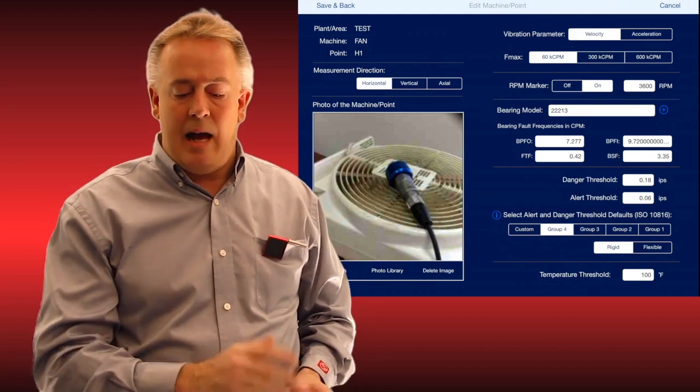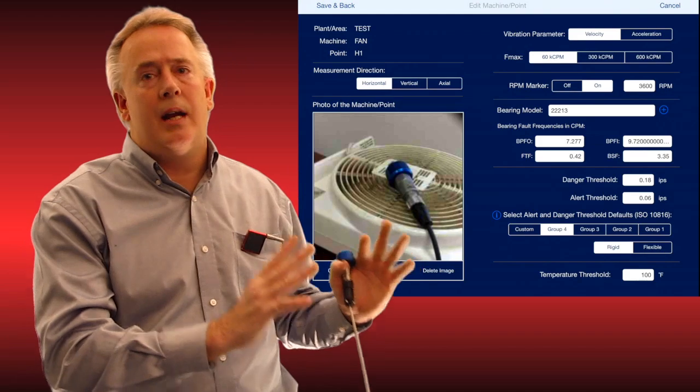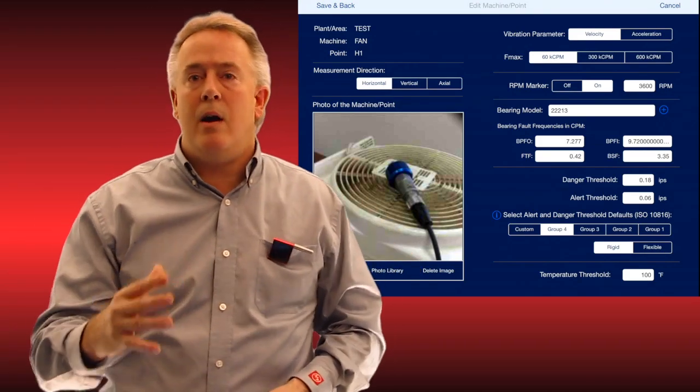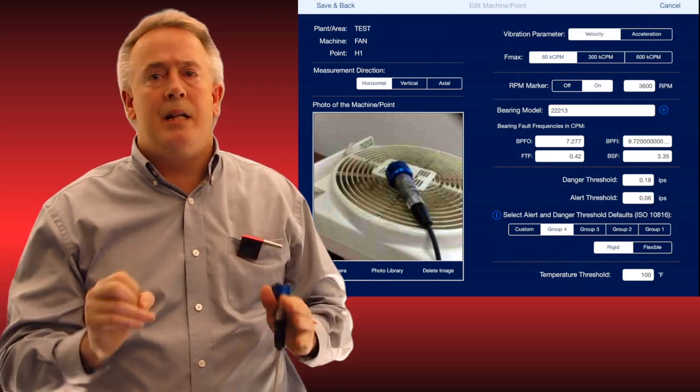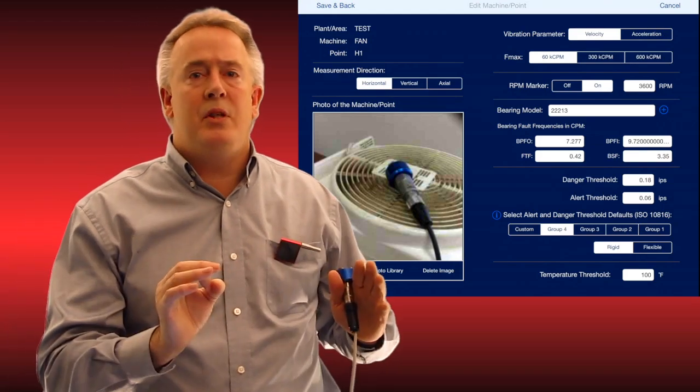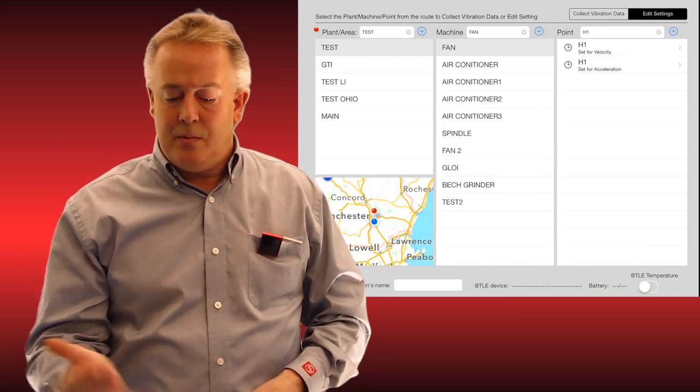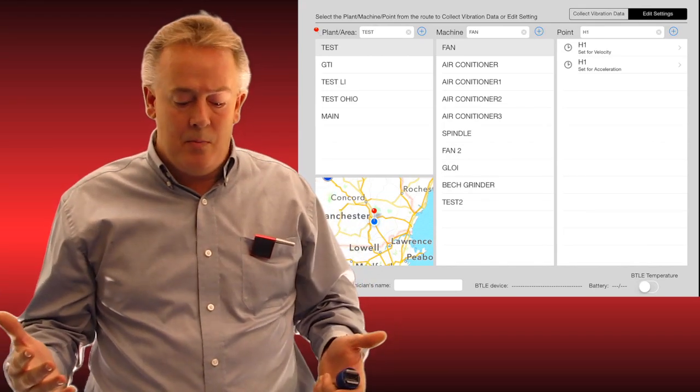It also depicts whether we're in a vertical, axial, or horizontal position, so everything is preset into the route. We hit save and back, and that puts that route permanently in its position for a one-time change in life, meaning we set it up once and we're done. That is pretty much the route collector, there's not much more to it.